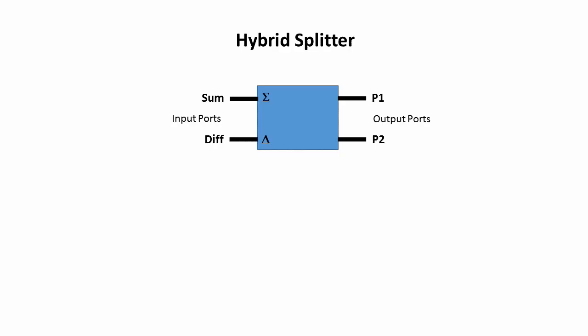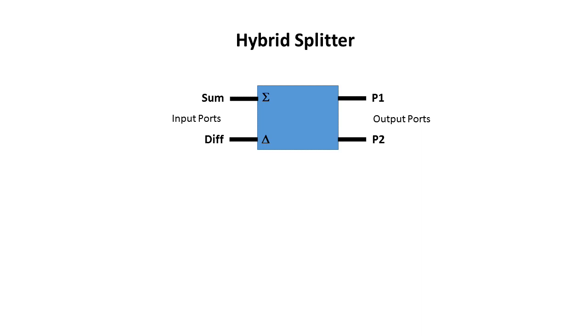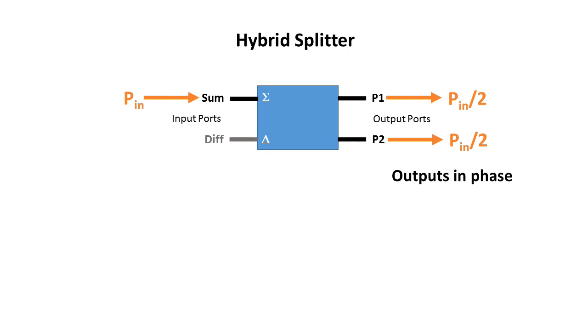The hybrid splitter is a useful component having four ports. P1 and P2 are the two output ports which connect to the antennas. There's a summing port input (sigma) and a difference port input (delta). If RF power is fed into the summing port the signal is divided equally and half the power is passed to each P1 and P2 in phase. The difference port is effectively isolated and no power is fed out of it. When RF power is fed into the difference port it's also split equally in power to P1 and P2, but this time they are 180 degrees apart in phase.